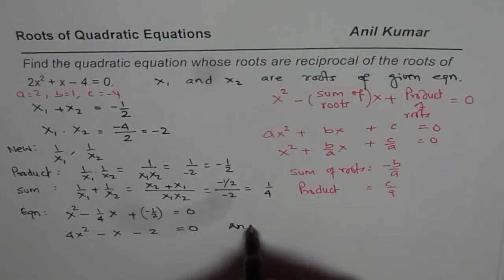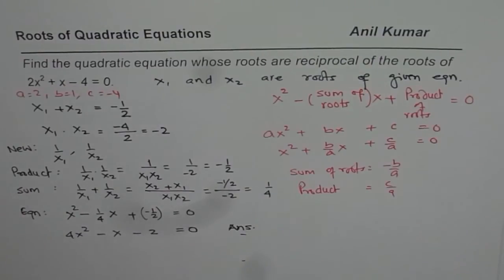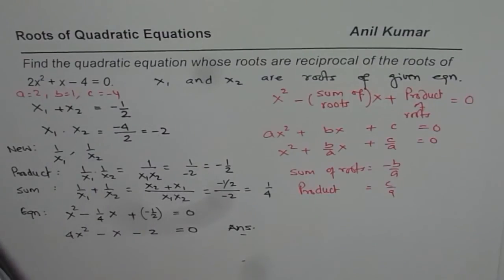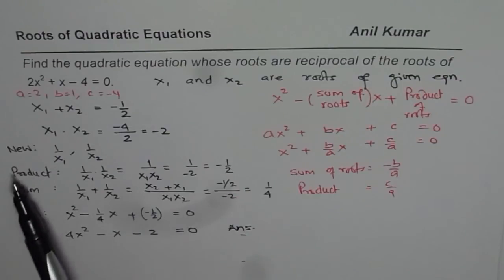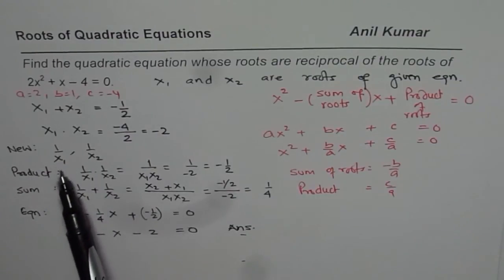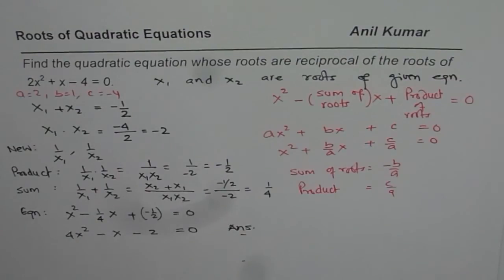I hope the steps are absolutely clear. What we did was: we began with the given equation and found the sum and product of its roots. Then, for the new roots, since they were reciprocals, we found the sum and product for the new condition, and that is how we obtained our answer. I hope that helps. Thank you and all the best.